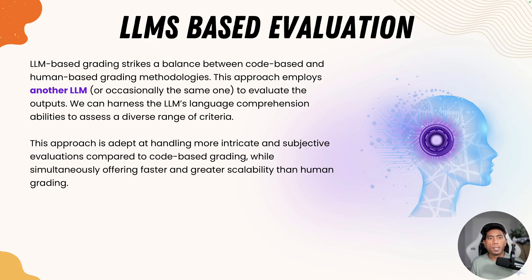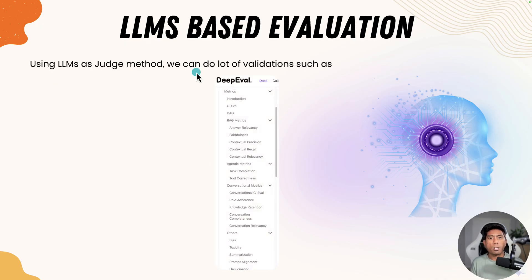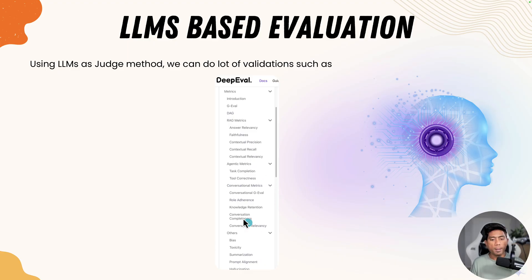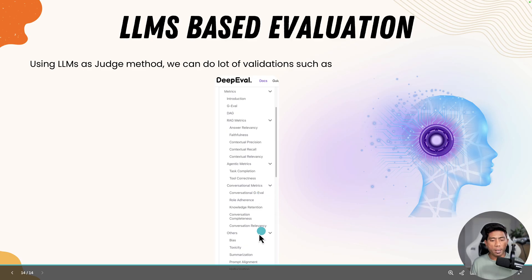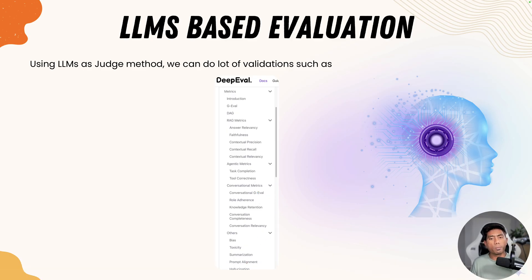This large language model as a judge approach supports a lot of different validation types. As shown from the Deep Eval website, you can evaluate RAG metrics like answer relevancy, faithfulness, contextual precision, contextual recall, and contextual relevancy. You can also do agentic metrics like tool correctness and task completion, conversational metrics like G-Eval and role adherence, and you can test for bias, toxicity, summarization, prompt alignment, and hallucination. There are so many things already covered by these tools, all of which I have covered in my Udemy courses.